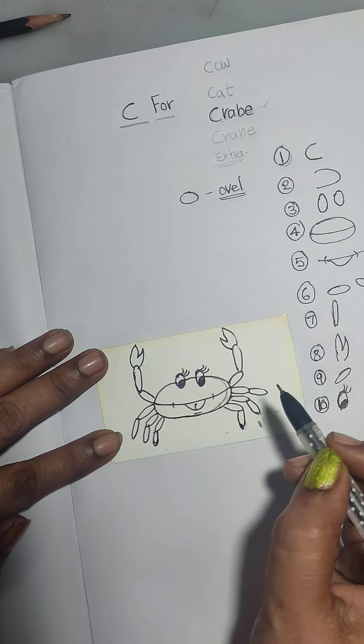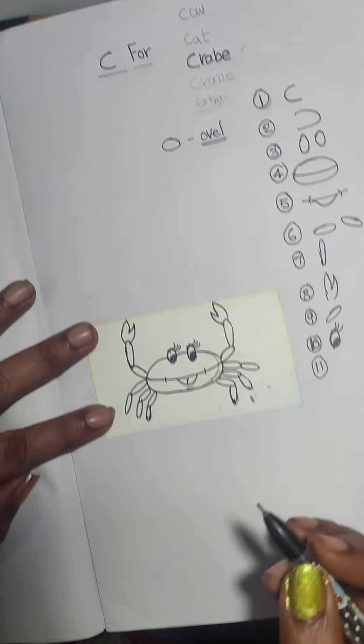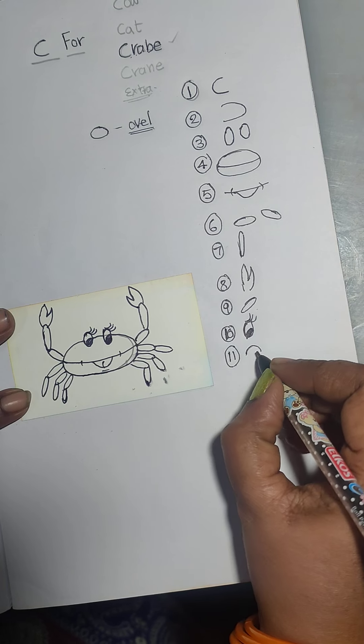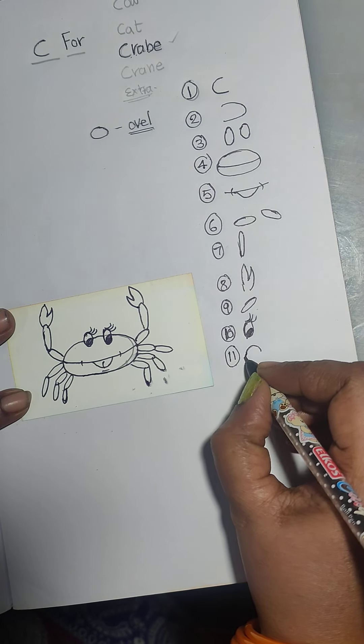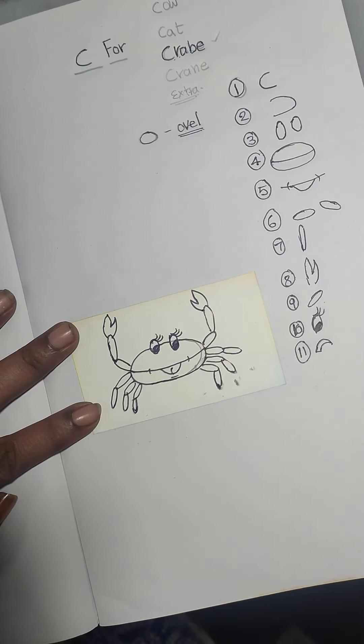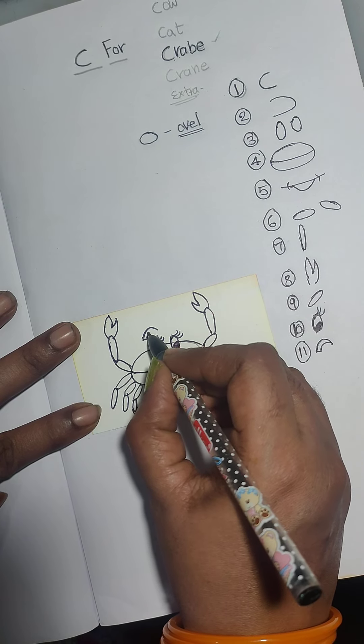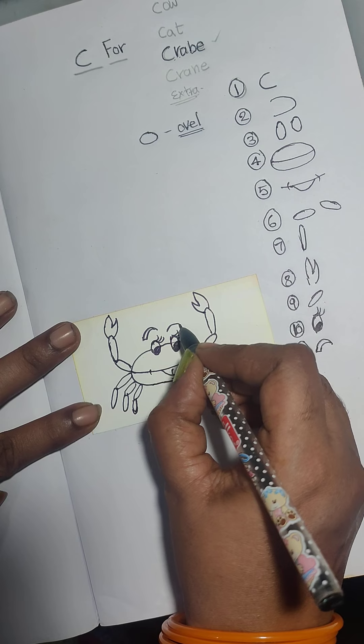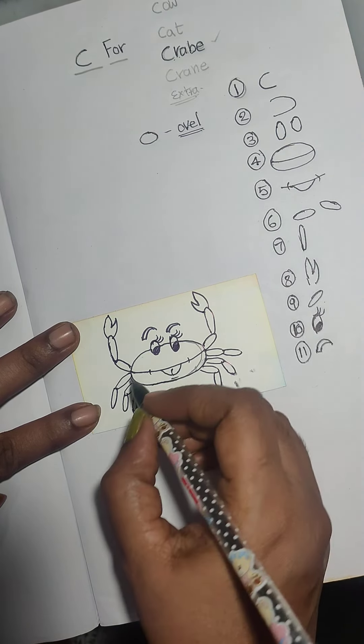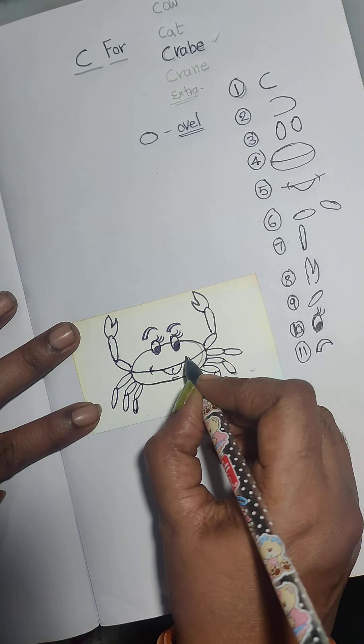What is we are doing next? First, eleventh step for the crab. Simply I make eyebrows of the crab. Okay. Yeah, simply I make. We get, we get our crab. Cotton crab.